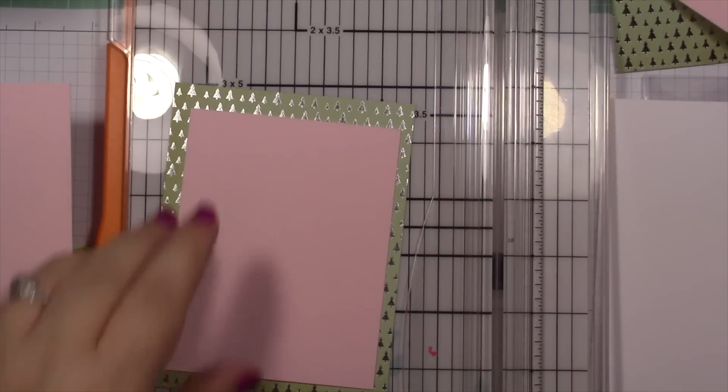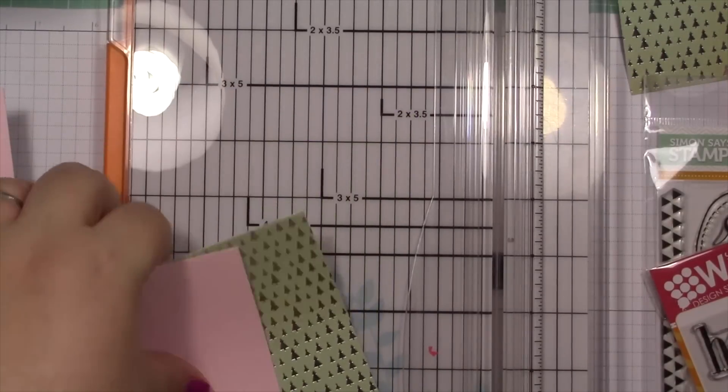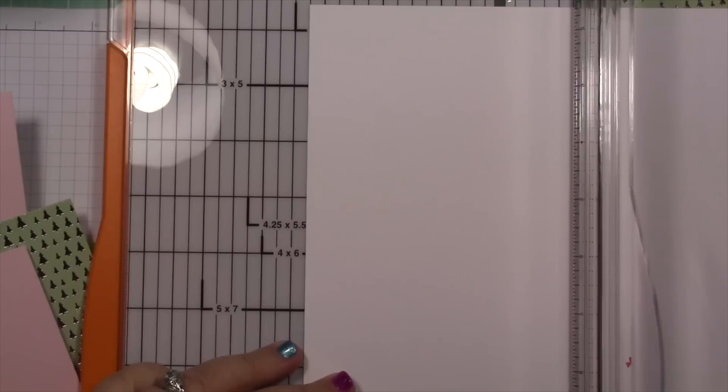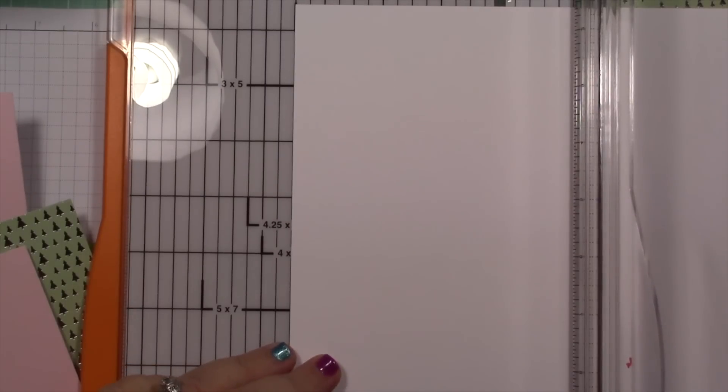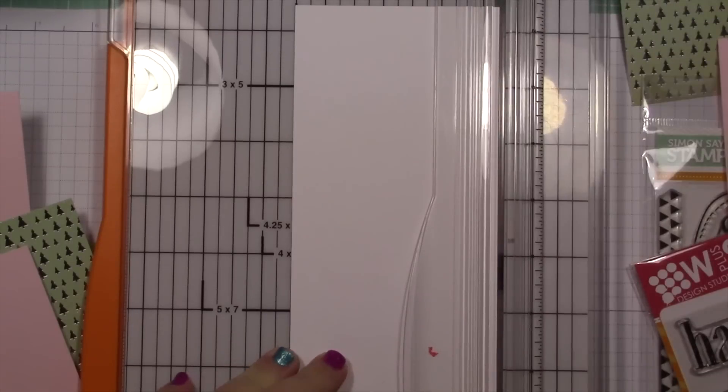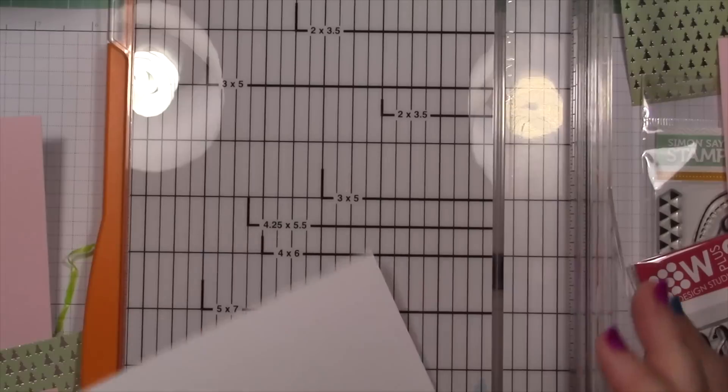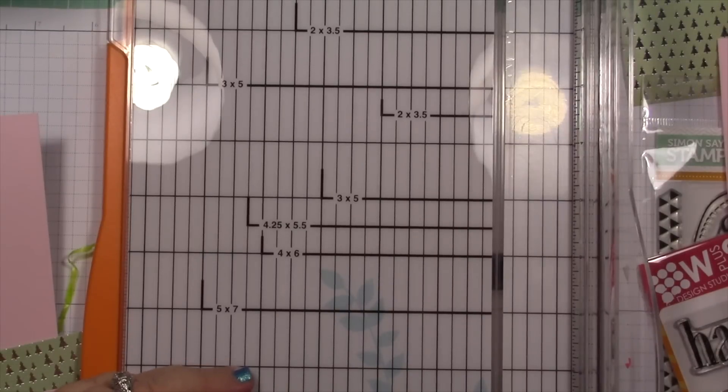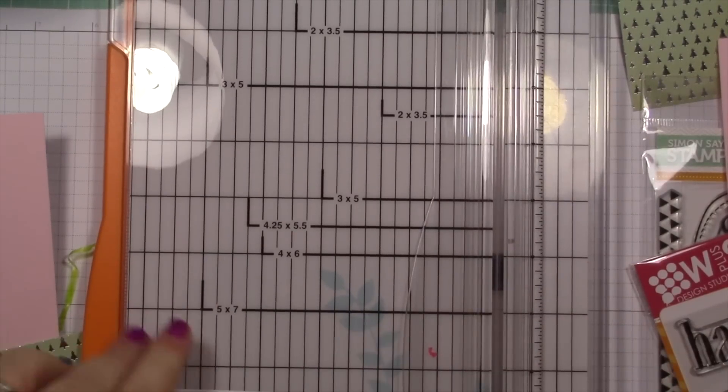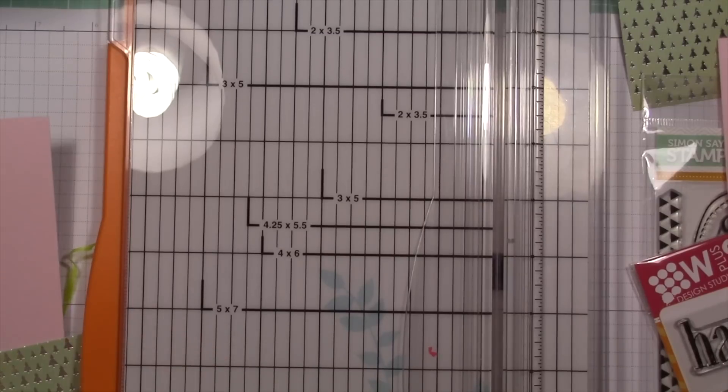I'm going to do 3 5/8 and for my white piece I want it an eighth of an inch smaller. So that was 3 5/8, so we're going to go to 3 1/2 and then 4 1/2. That should give us an eighth of an inch border for the pink.